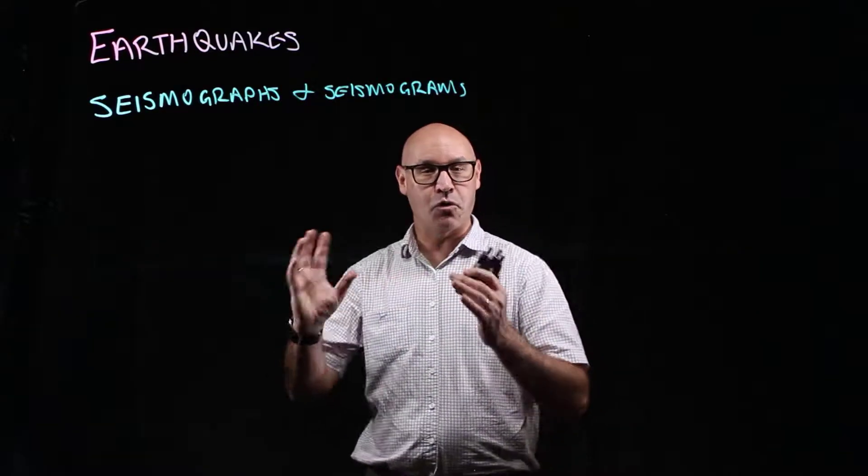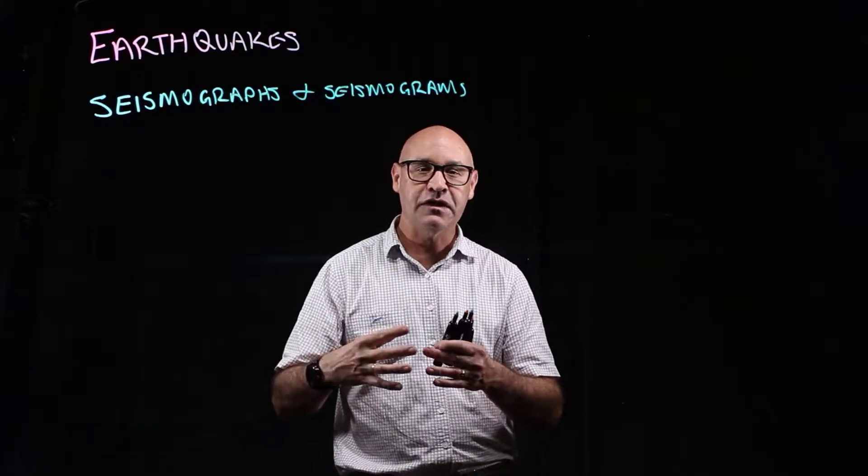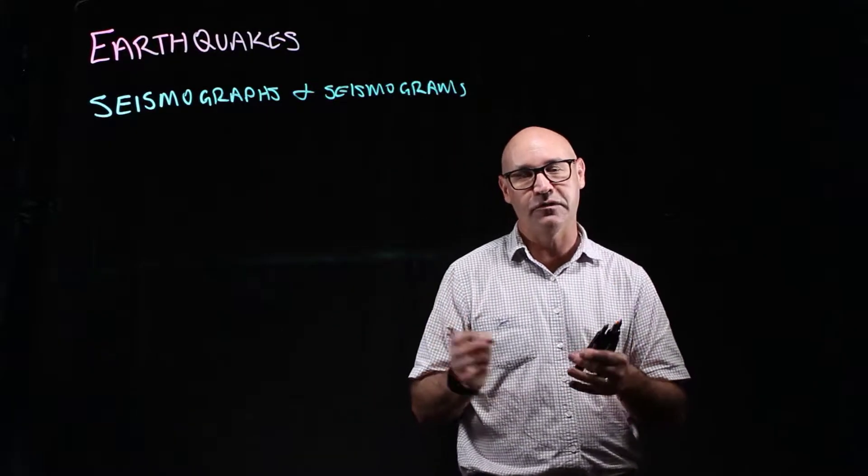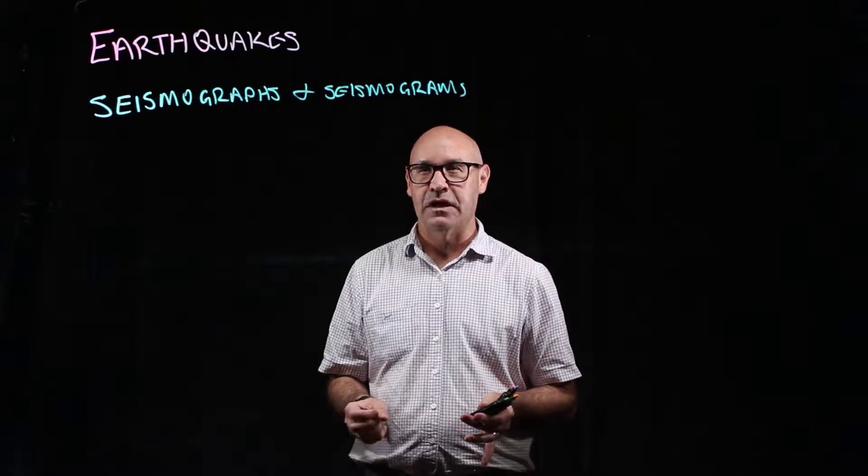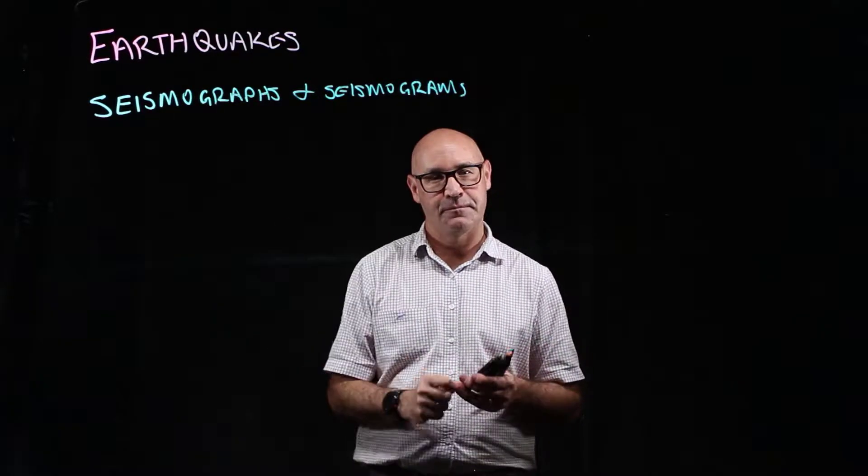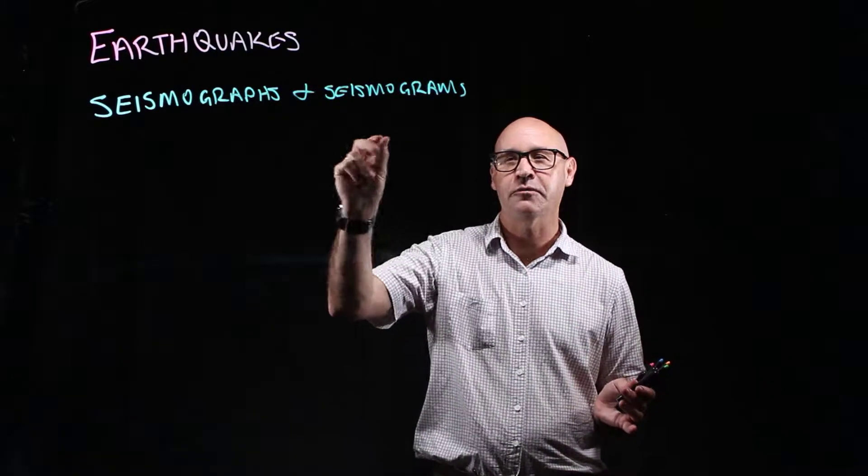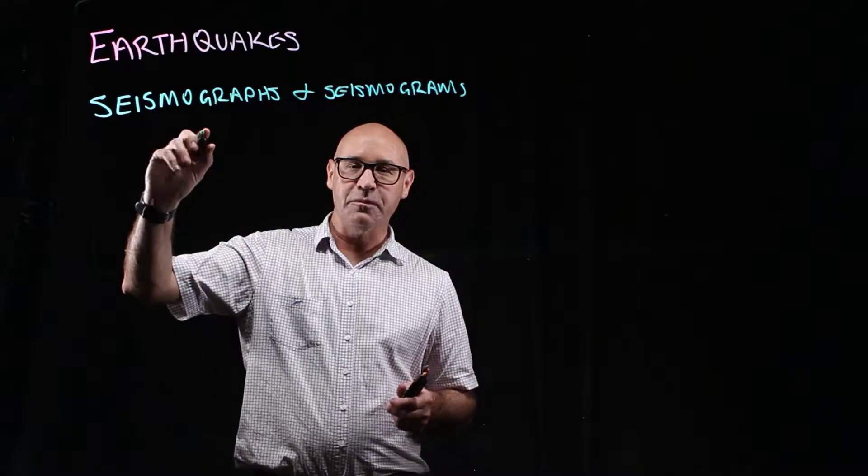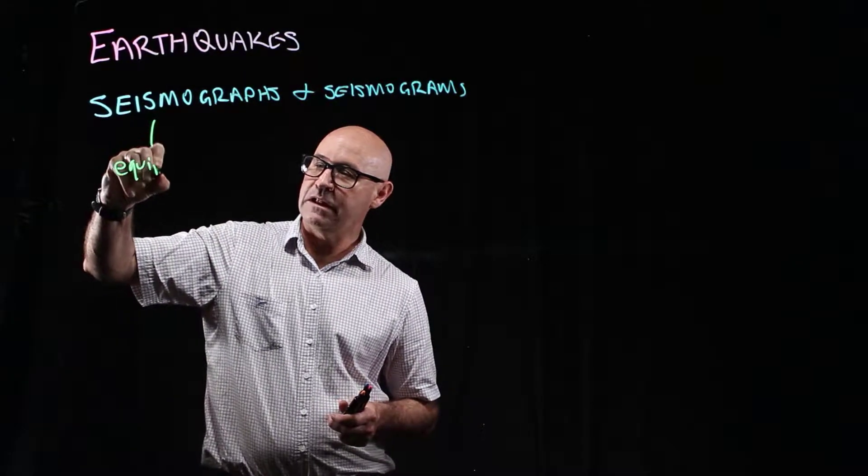But there's particular equipment that seismologists use that can detect even the slightest seismic event. The actual piece of equipment is called a seismograph and the visual record that it produces is called a seismogram. So the seismograph is the equipment, it's the machine.